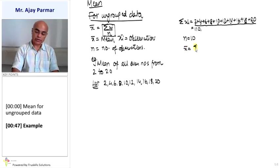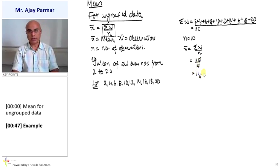Applying in the formula, x bar is equal to sigma xi upon n. That will be 110 upon 10. So 0 and 0 cancel, and our final answer of mean is 11.